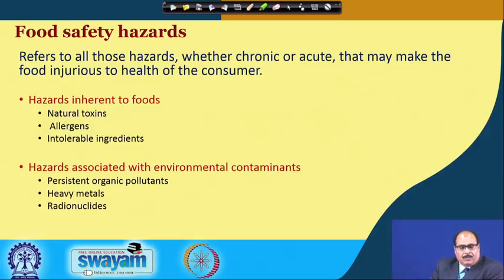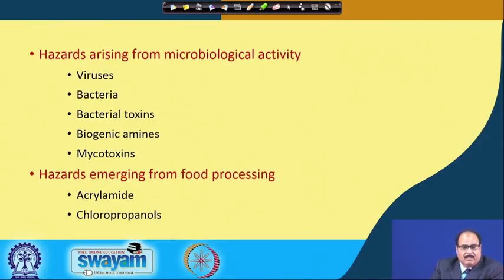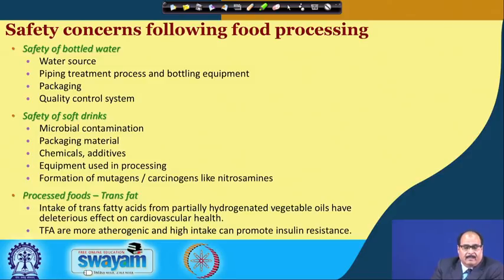Food safety hazards refer to all hazards, whether chronic or acute, that may make food injurious to health of consumers. These hazards may be inherent to food like natural toxins, allergens, intolerable ingredients; or hazards associated with environmental contaminants like persistent organic pollutants, heavy metals, radionuclides; hazards arising from microbiological activity such as viruses, bacteria, bacterial toxins, biogenic amines, mycotoxins; or hazards emerging from food processing like acrylamides, chlorophenols etcetera. After processing, our food must be safe for its consumption.